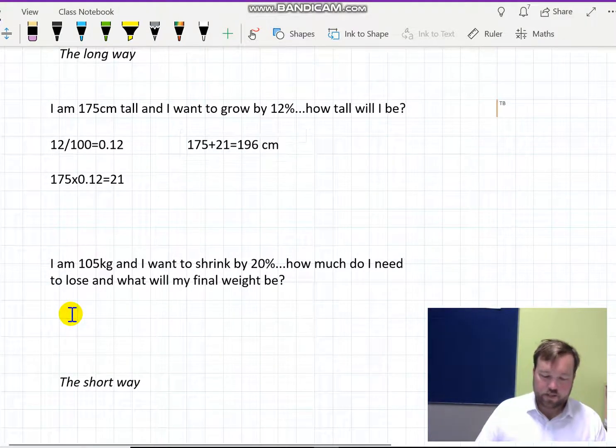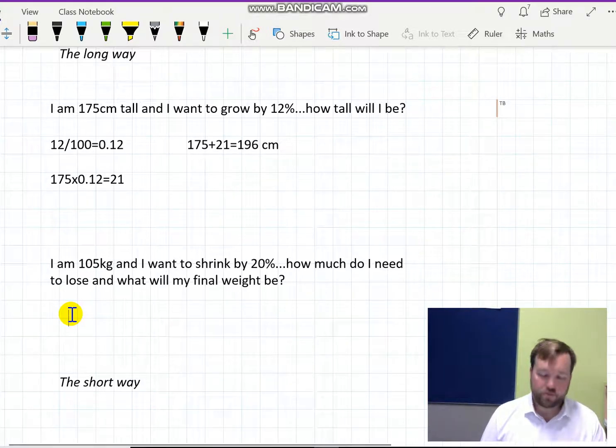All right, let's think about decreasing. Let's say I'm 105 and want to shrink by 20%. First step is we take that 20 and we convert it into a decimal: 0.2, easy enough.